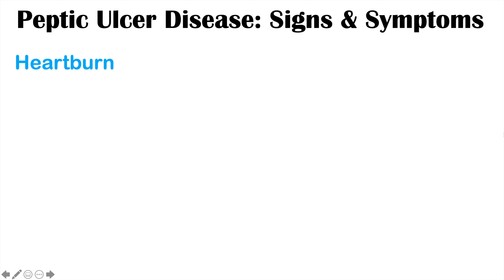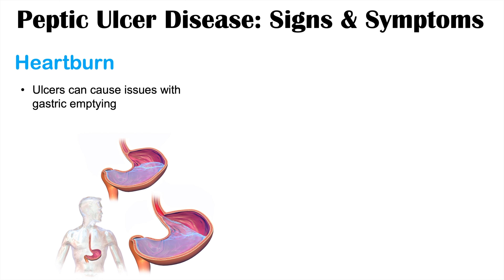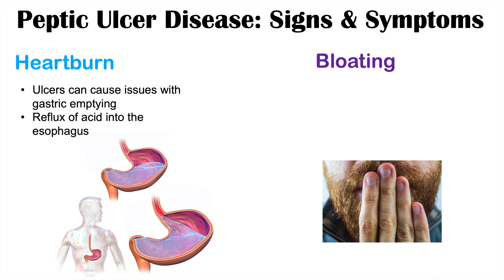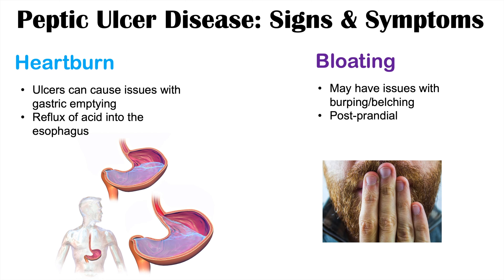Another important sign or symptom associated with dyspepsia is heartburn. Heartburn in peptic ulcer disease can occur because ulcers can cause issues with gastric emptying, so gastric contents can sit in the stomach, and reflux of those gastric contents and gastric acid can reach the esophagus, leading to heartburn. Patients may also have bloating, along with burping and belching, and this most often occurs postprandially — after eating.